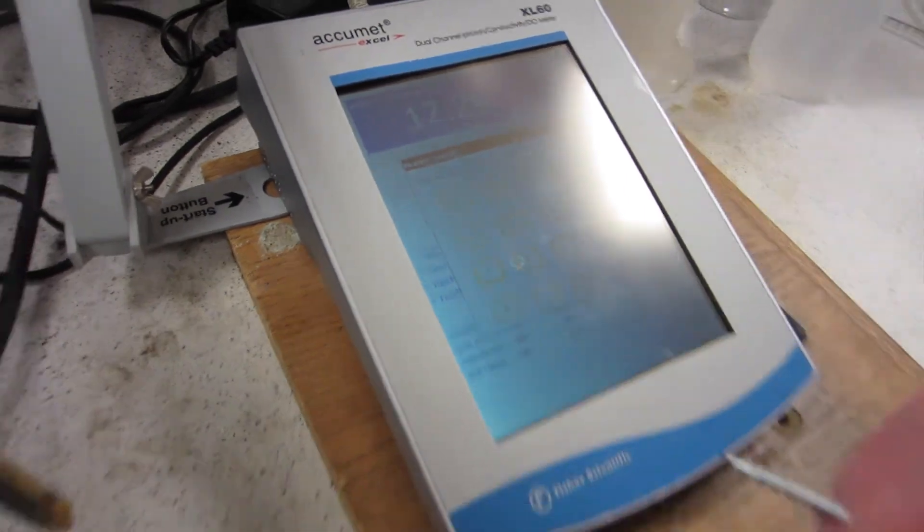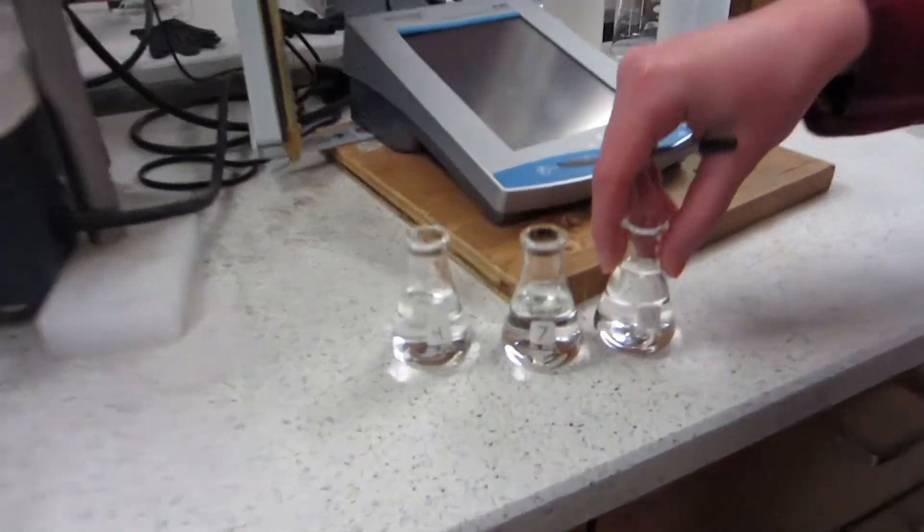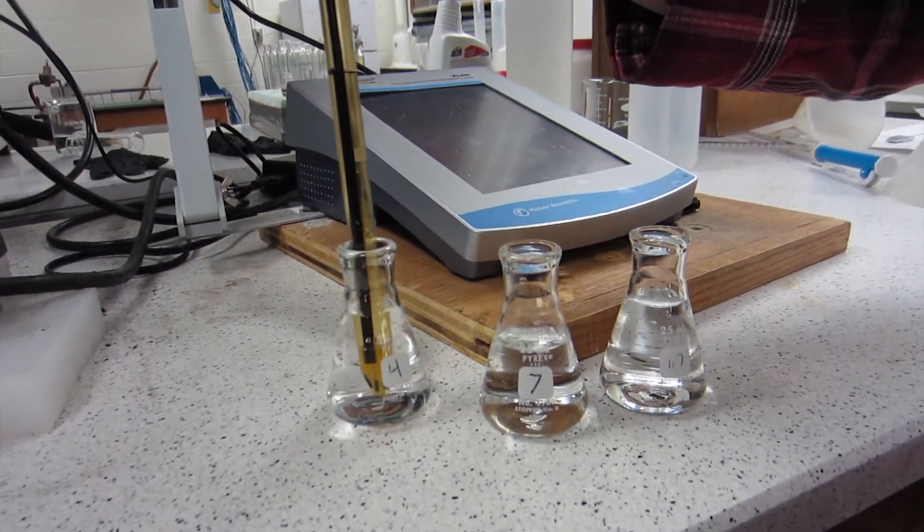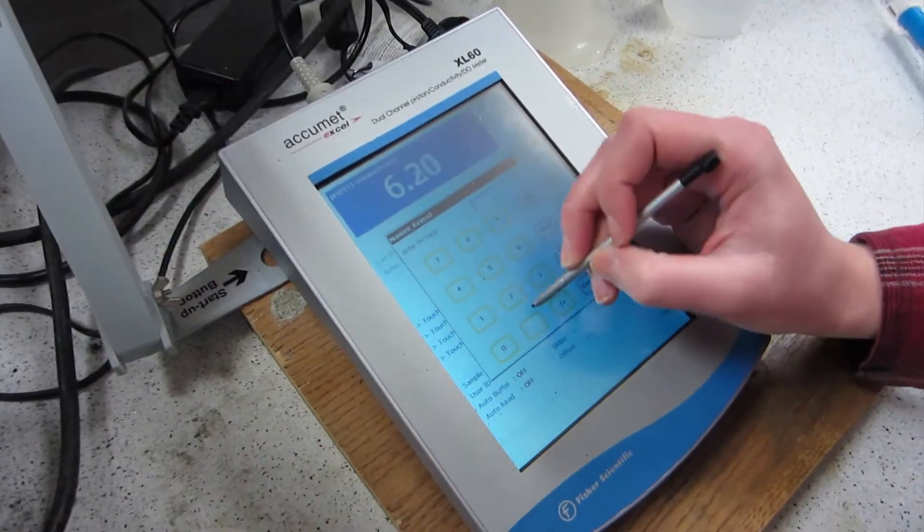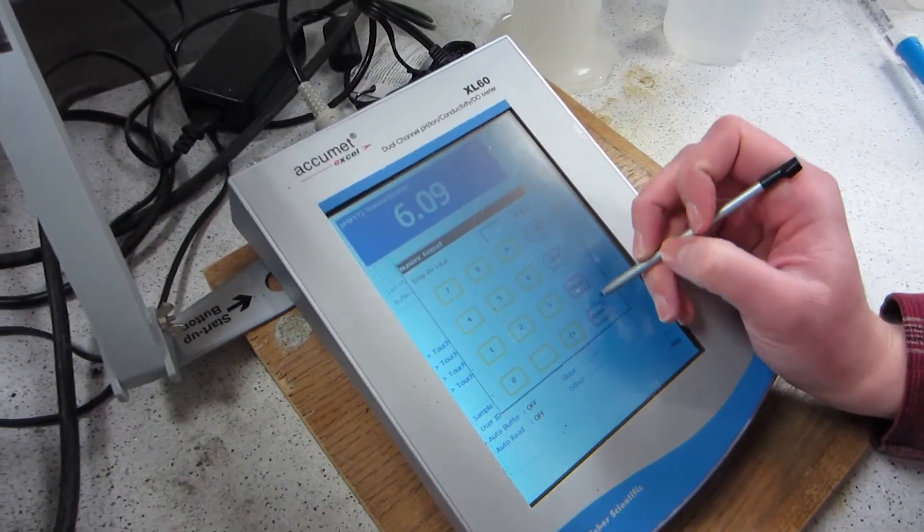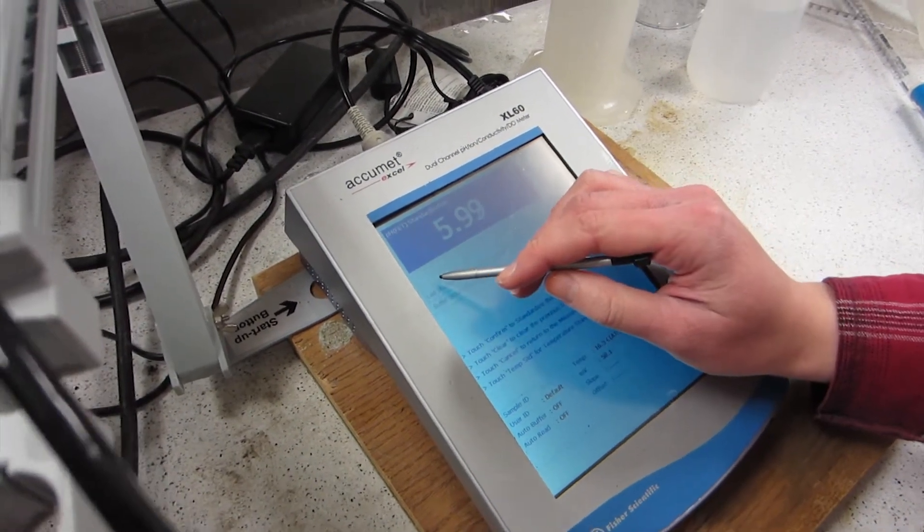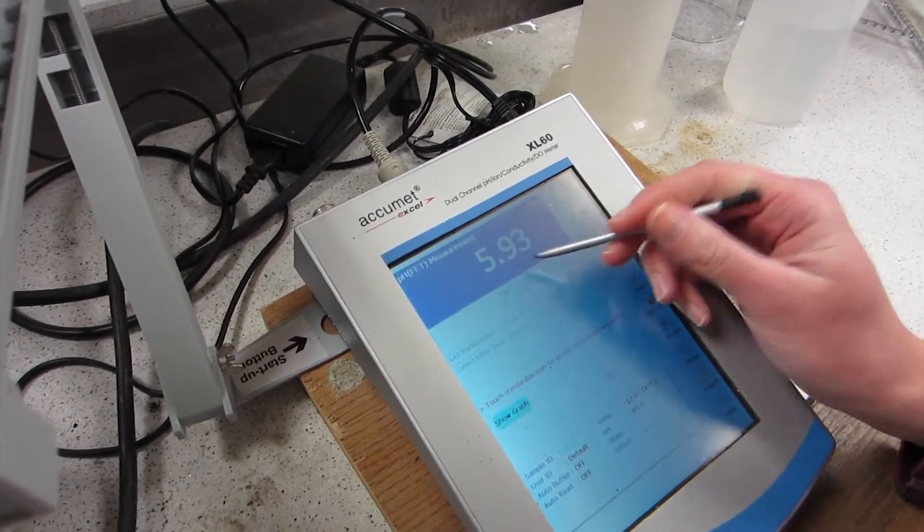Then what you're going to do is use your 4 pH, 7 pH, and 10 pH buffers. You're going to insert the probe in each buffer, and then wait until this screen shows up asking what pH it is. In this case, it's 4.01, and you're going to enter that in. Then it's going to flash at you, and you want to hit confirm to make sure that it takes. So it has that one standardized.